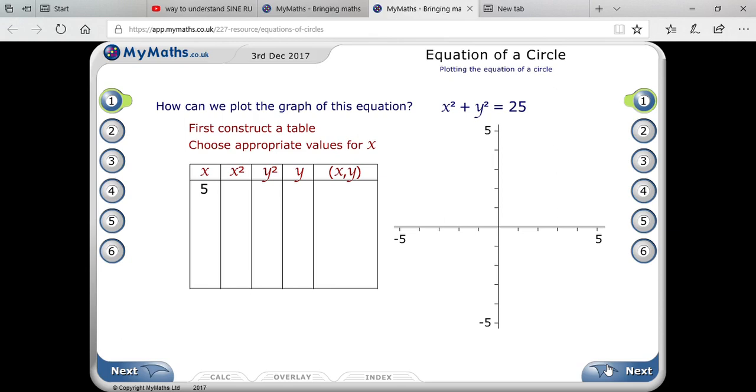Let's see what we're doing here. I hope you can see the graph on screen. First, take the value of x = 5, so it will be 5² = 25, then you'll get y² = 0.